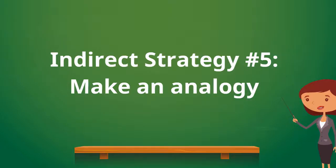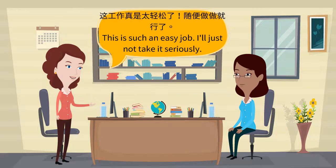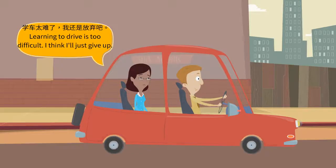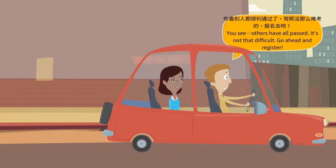The fifth strategy is making analogy — referring to similar past events, either with negative outcomes to persuade someone not to do something, or with positive outcomes to encourage repeated actions. Example 1: 这工作真是太轻松了。随便做做就行了啊。 我觉得你还是不要对工作掉以轻心，上一名员工就是因为这样被炒掉的。 Example 2: 学车太难了，我还是放弃吧。 你看别人都顺利通过了，驾照没那么难考的，报名去吧。